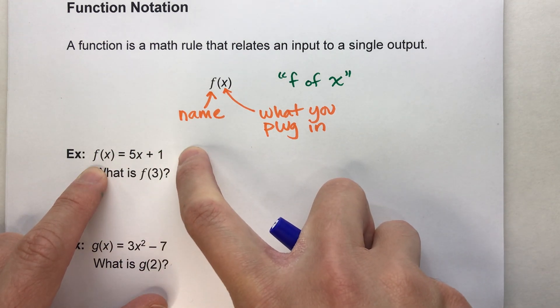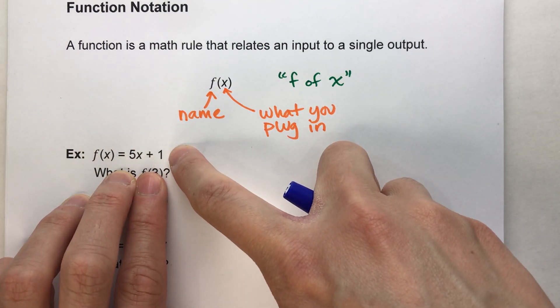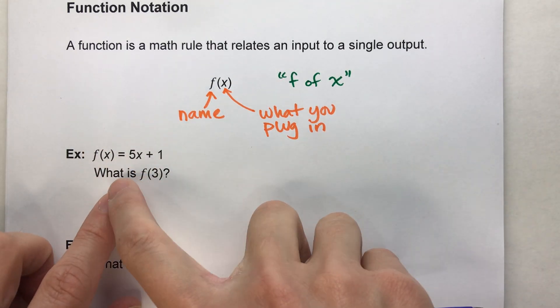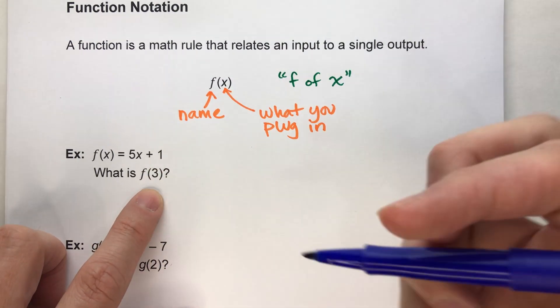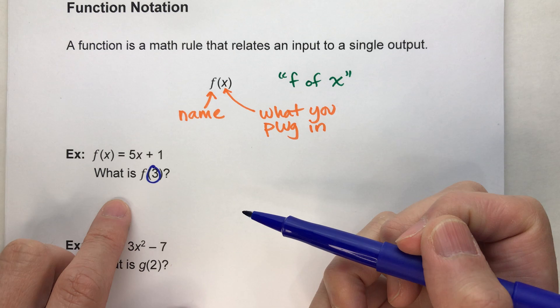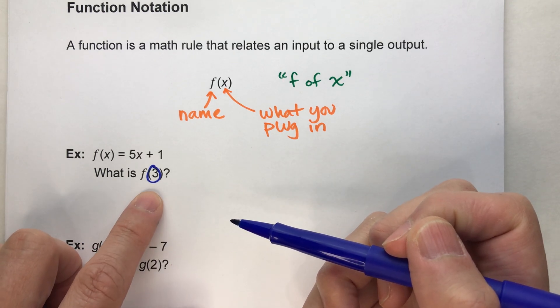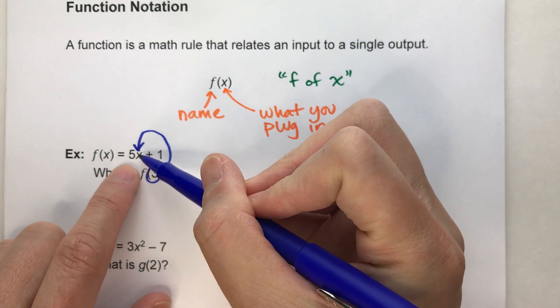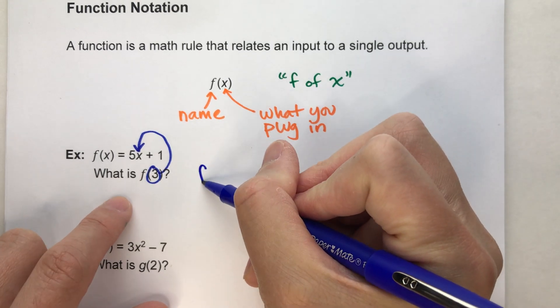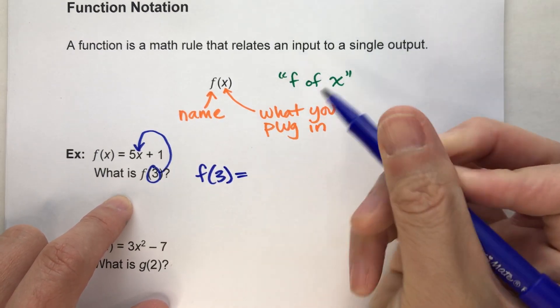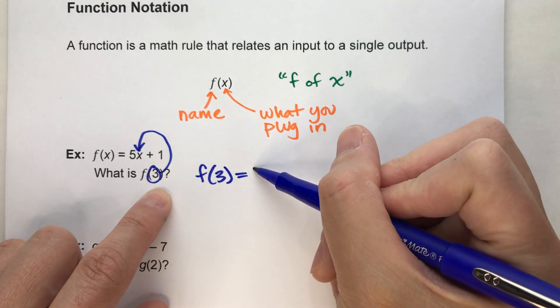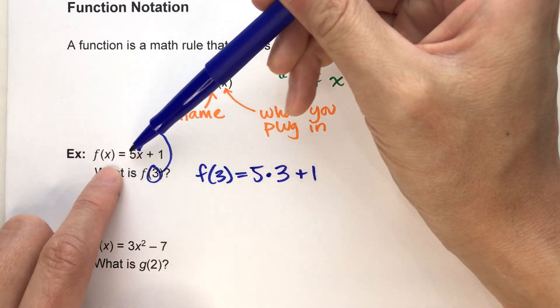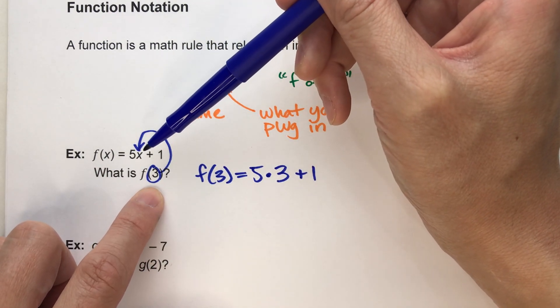So that's our function rule and this is written in function notation. What we want to know is, if this is our function rule, what is f of 3? In other words, if we put 3 into our rule, what would we get? So what that basically means is, we're going to take 3 and instead of doing 5 times x plus 1, f of 3 equals, we're going to do 5 times 3 plus 1. All we're doing is replacing x in our function rule with the 3.